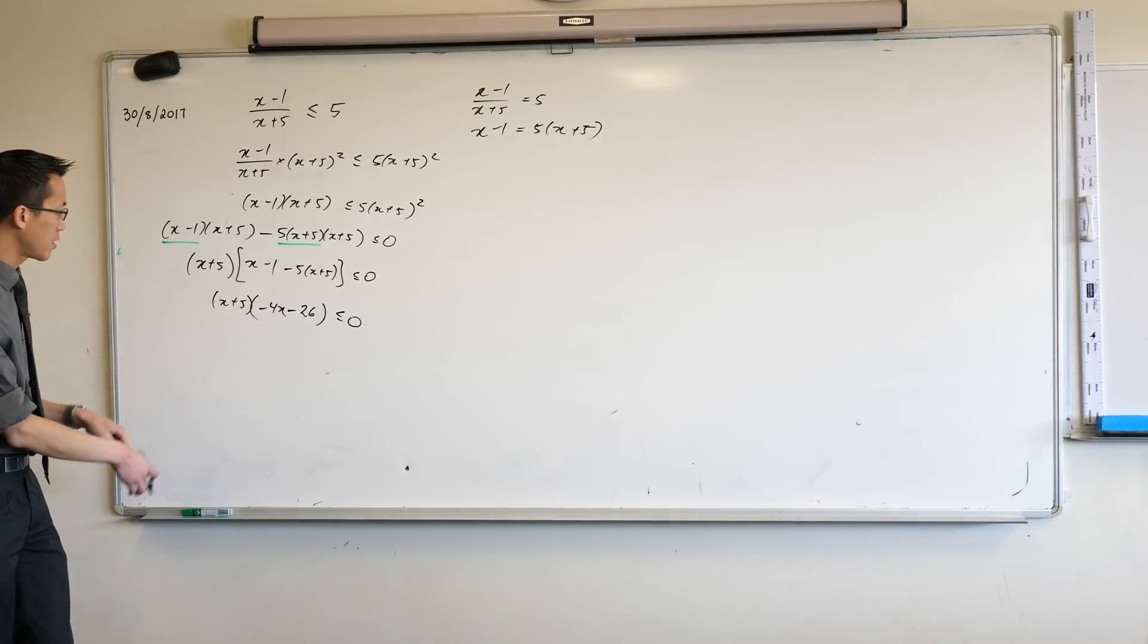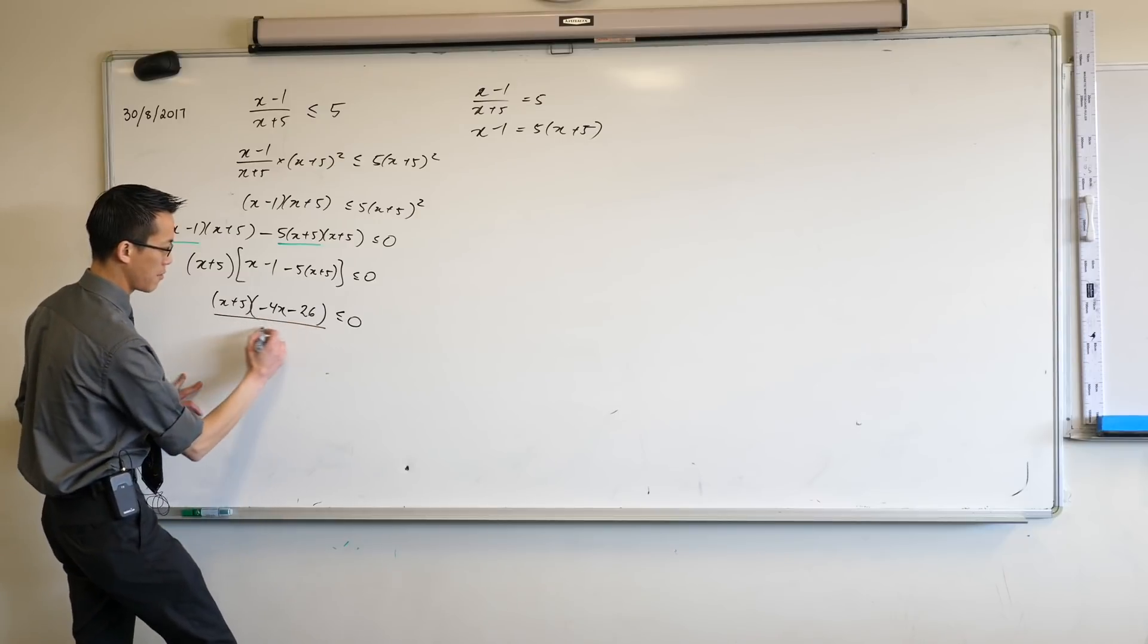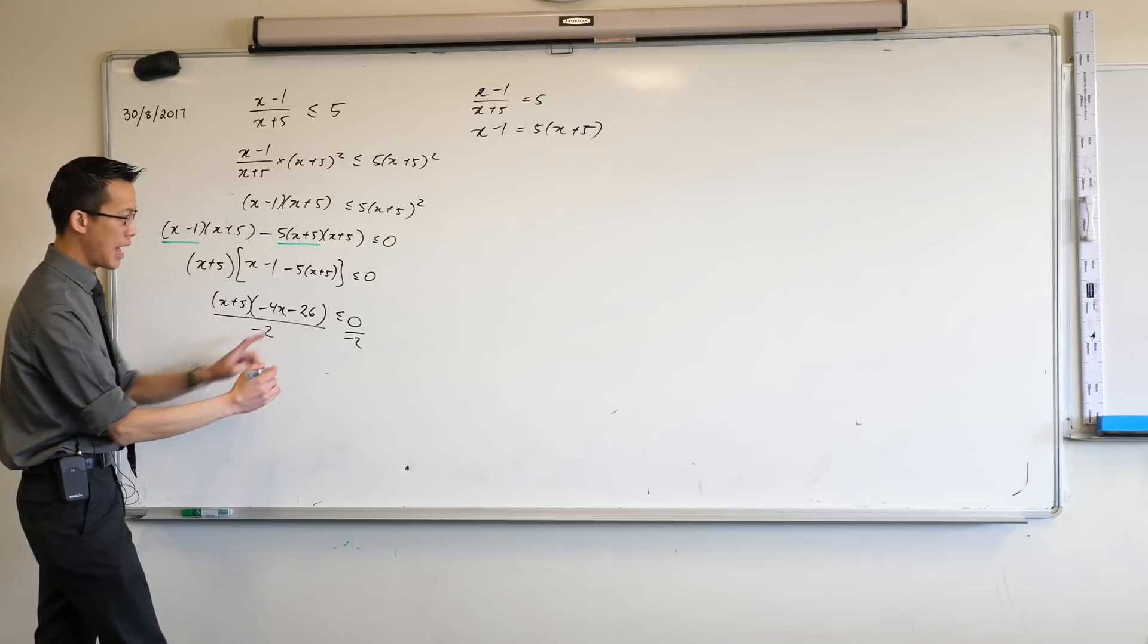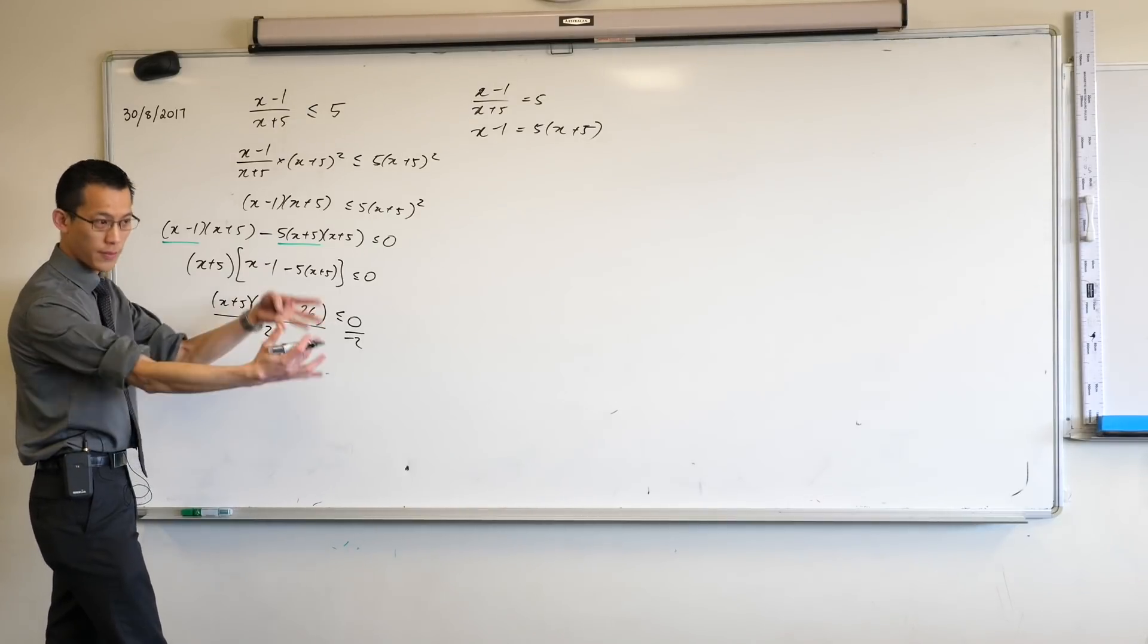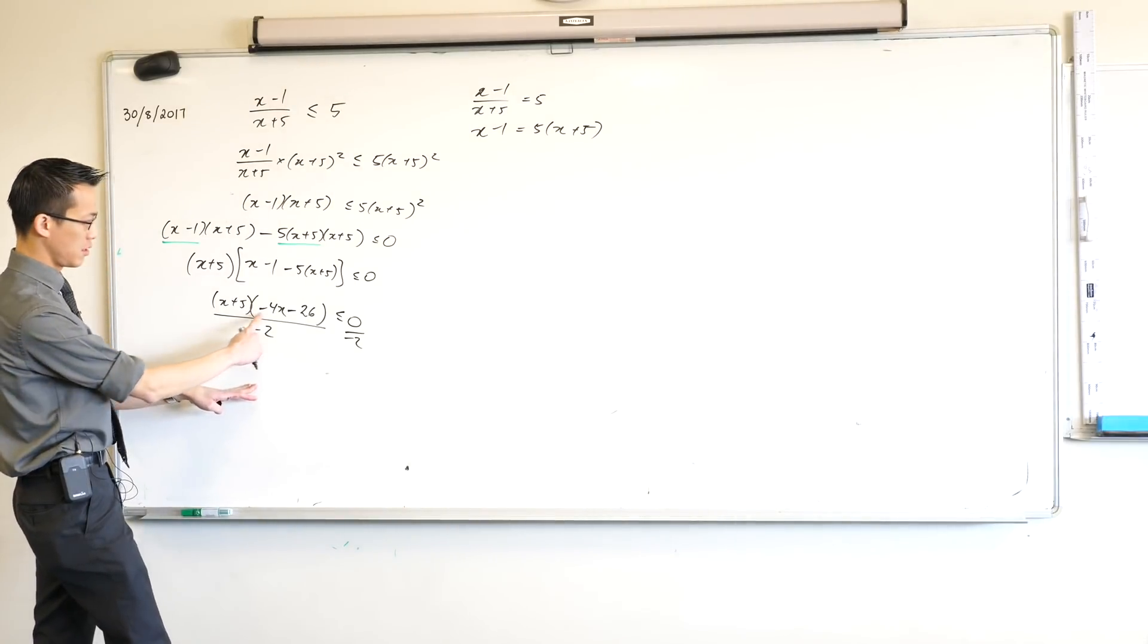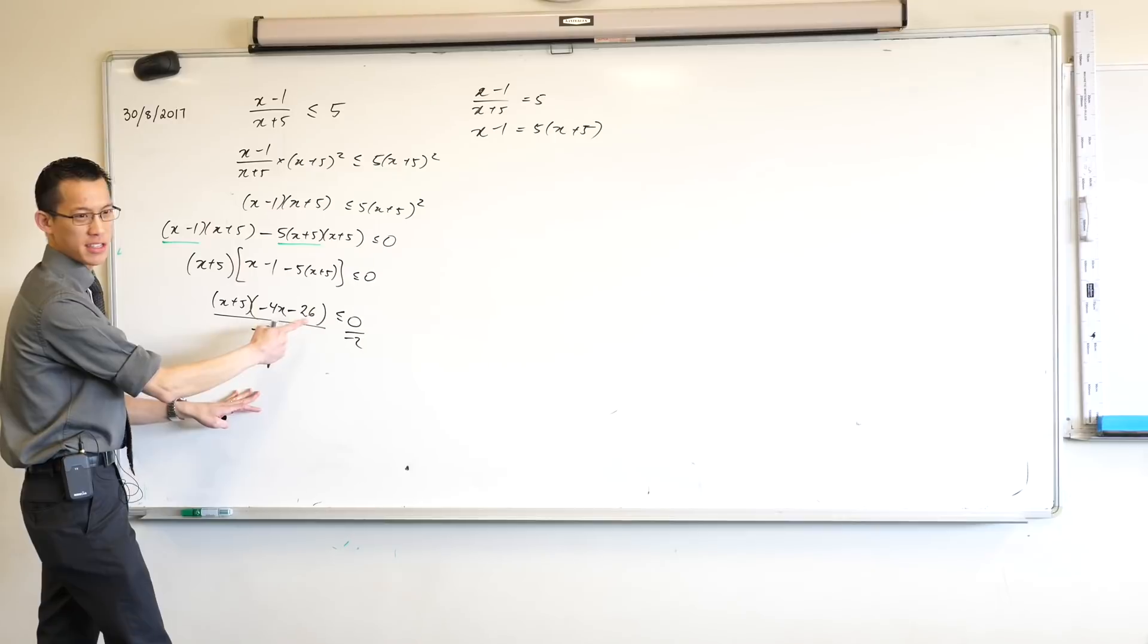I can tidy this up a little further, so I can divide this whole thing by negative 2 and this whole thing by negative 2 and then change the direction of the inequality because I've divided by a negative. Is that okay? Do you see why I'm dividing by negative 2? See this guy in here? It's just a bit messy, right?